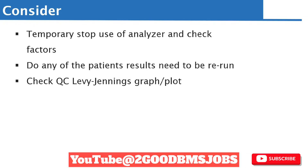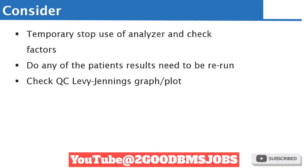In coagulation, maybe you run a quality control on PT, APTT, fibrinogen, or D-dimer. If a control failed on the normal plasma, you need to ask where did it fail — all parameters or just one? Similarly in biochemistry, you might measure alkaline phosphatase or total bilirubin. What exactly failed will determine the areas you investigate. That is why you need to check the Levey-Jennings graph.